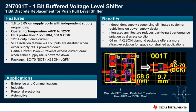The example shown here shows the layout of a discrete four-FET solution which takes up approximately 60 millimeters square of space, compared to the DCK package implementation of the 2N7001T which takes up approximately 10 millimeters square.